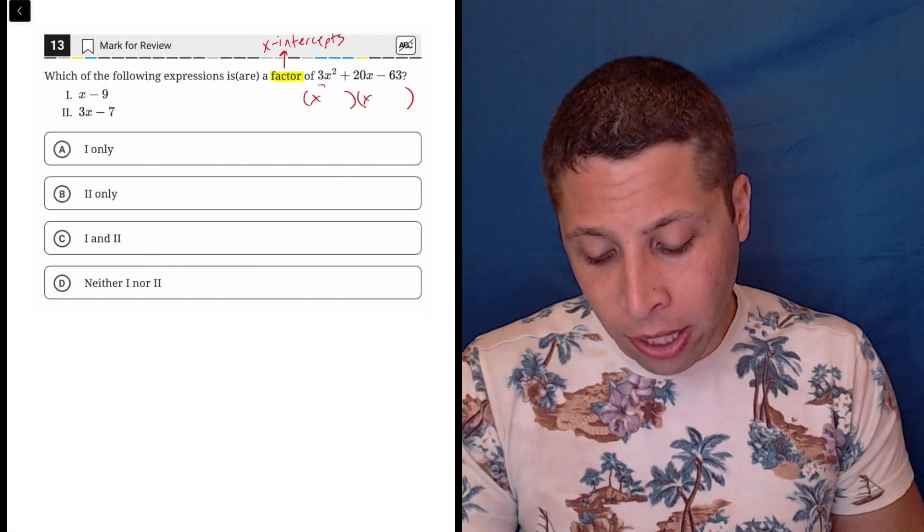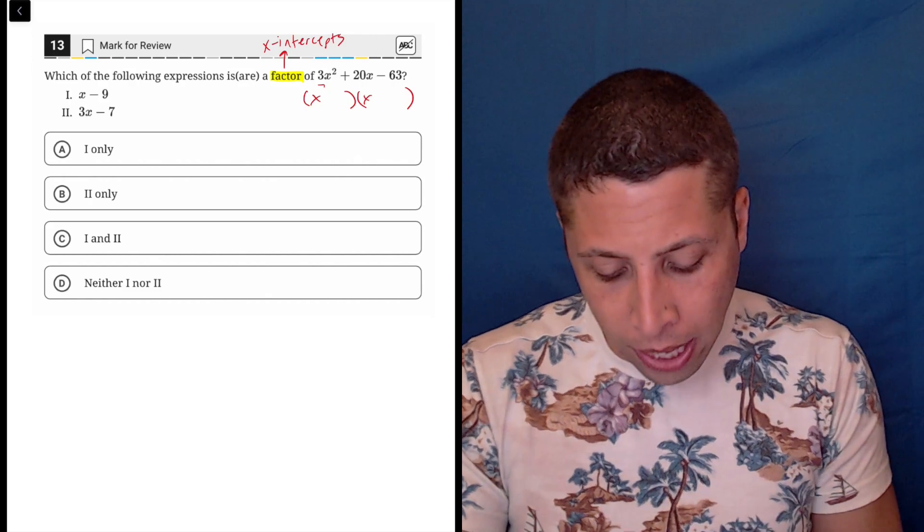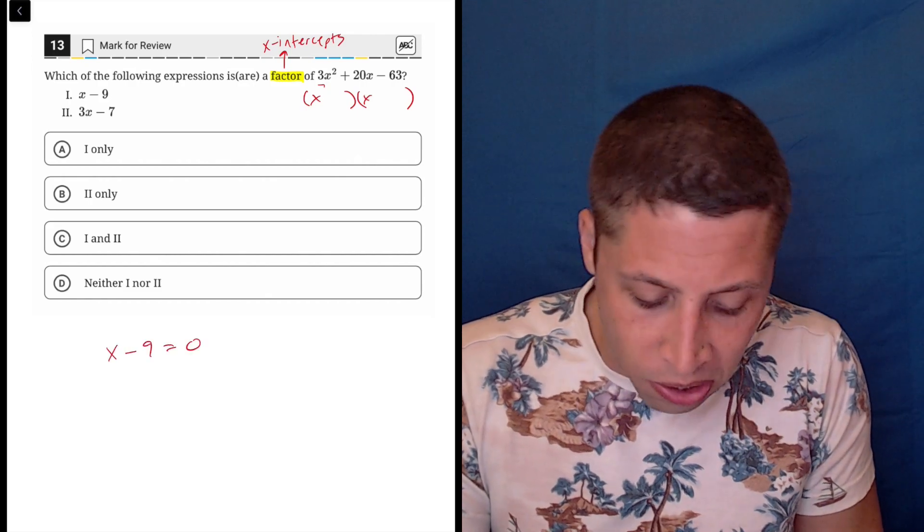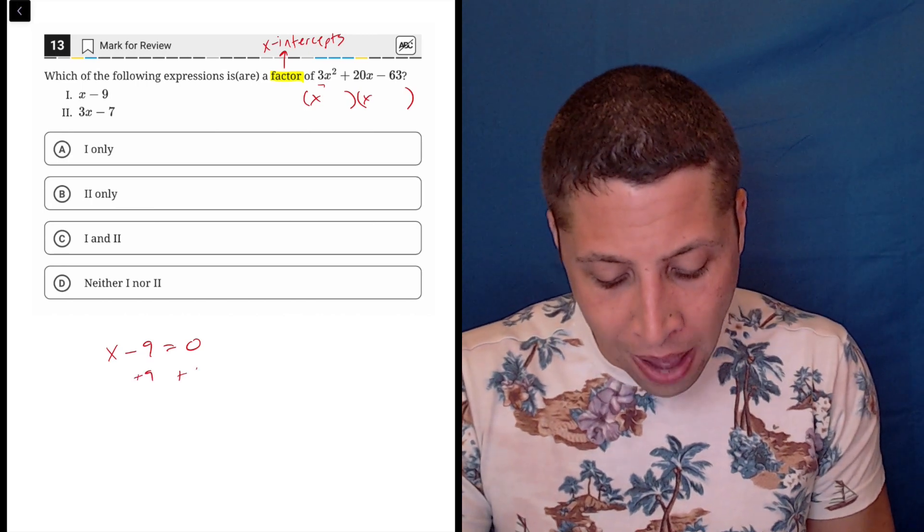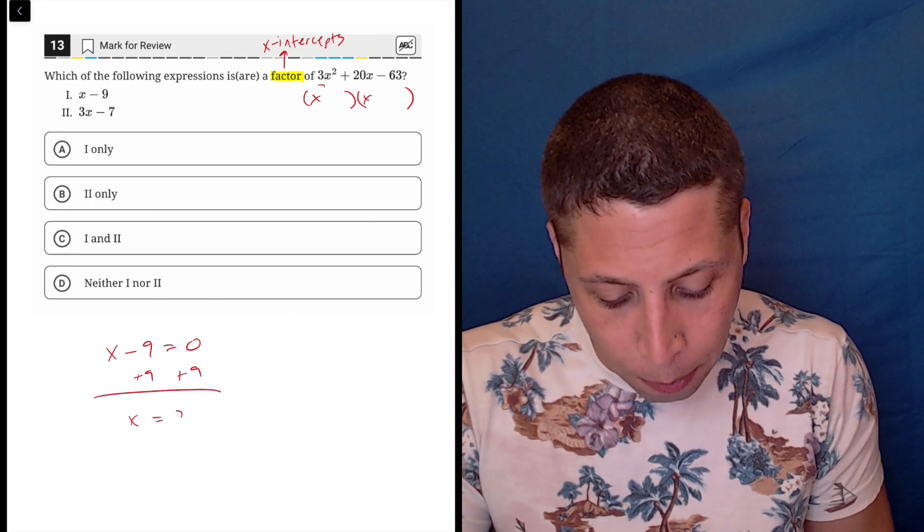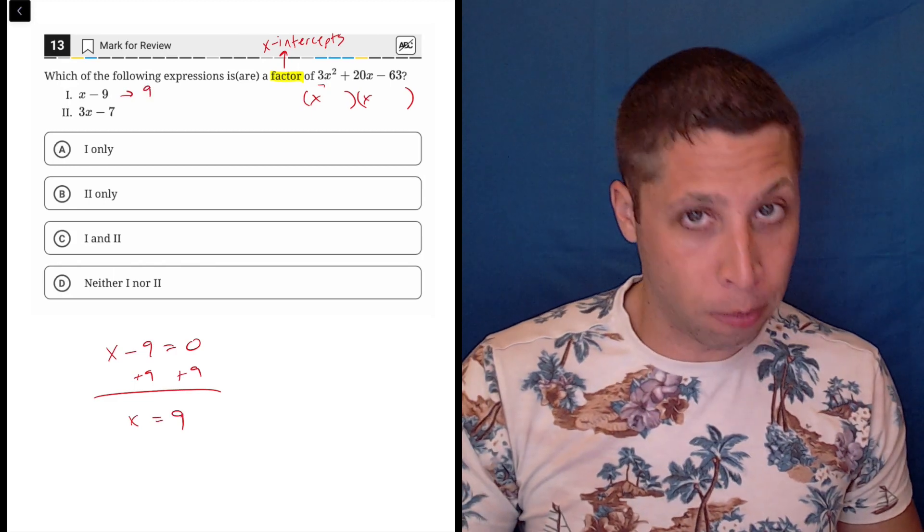Now, the only thing I would change is remember that when we have a factor, it's kind of like we're setting it equal to 0. So if the factor is x minus 9, the value of x, the x-intercept, would be positive 9. So it's kind of like that's the number that I'm looking for.